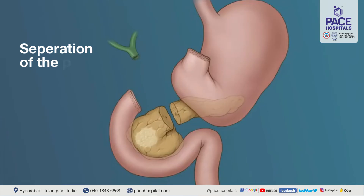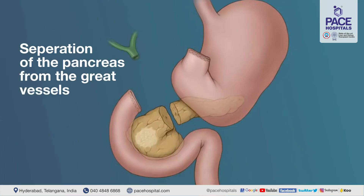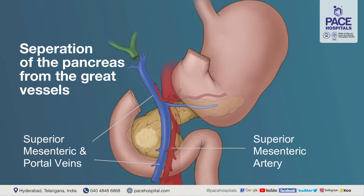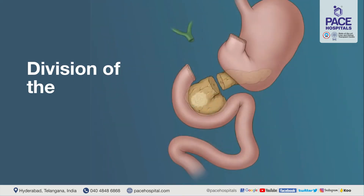After division of the neck comes a very crucial step: separation of the pancreas from the great vessels. The two vessels which pass behind the neck of the pancreas — called the superior mesenteric artery and the superior mesenteric vein — give the entire blood supply to the small and large intestine. These vessels are in intimate relation to the head of the pancreas and are frequently involved by pancreatic tumors. During this crucial part of the operation, the head of the pancreas is meticulously separated from these two vessels. Once done, the jejunum — the second part of the small intestine beyond the duodenum — is divided and the specimen comes out.